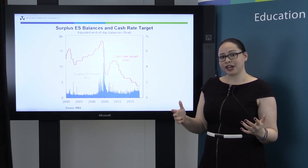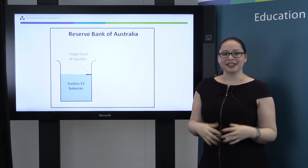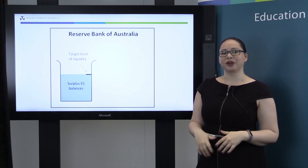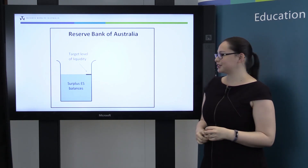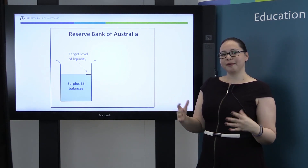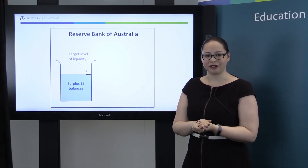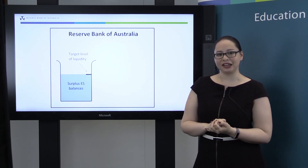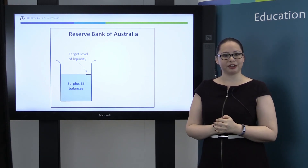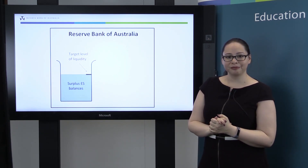A day when the cash rate target changes looks very much like any other for the Domestic Markets Department. The Reserve Bank gauges demand in the market and works out the appropriate level of supply to keep the cash rate close to target — we call this our target level of liquidity. I've represented the supply of liquidity visually by a beaker filled with liquid, and I've marked the target level of liquidity in as a little black line on the beaker. All we need to do to keep the cash rate close to target is to ensure that the supply of cash remains near that target level of liquidity.